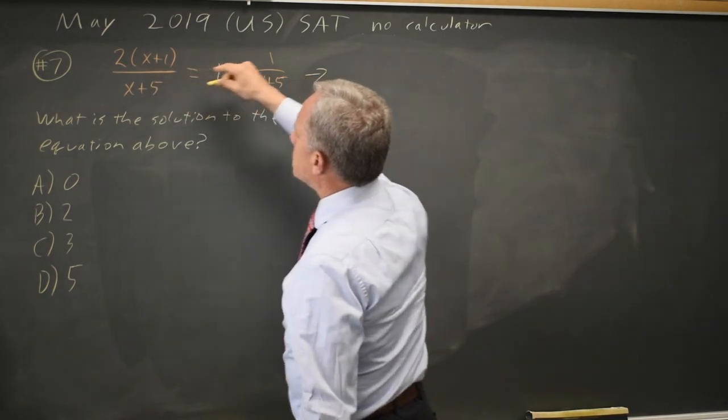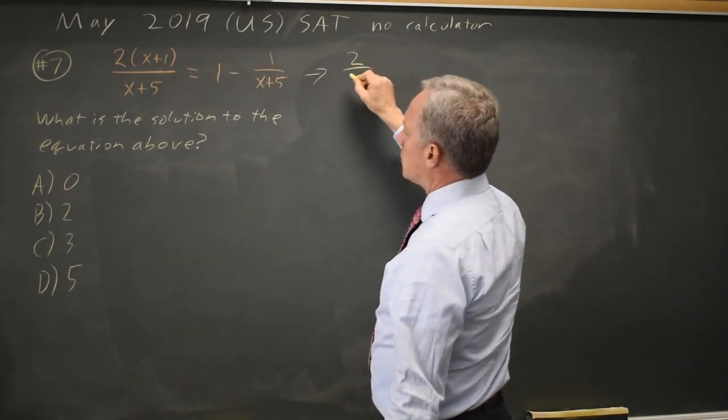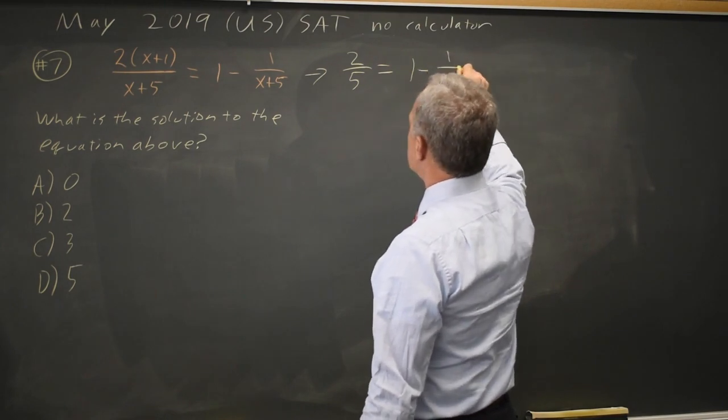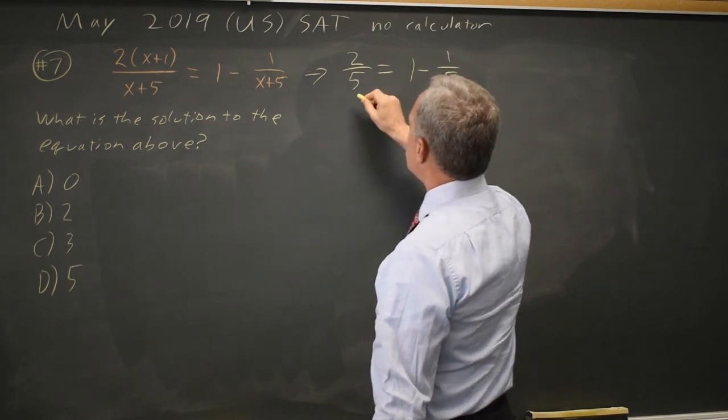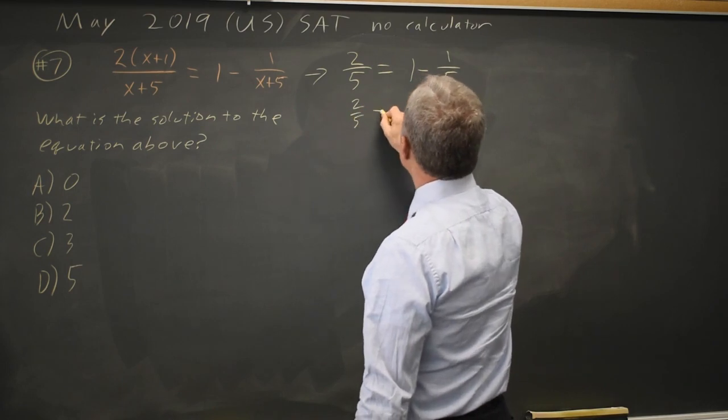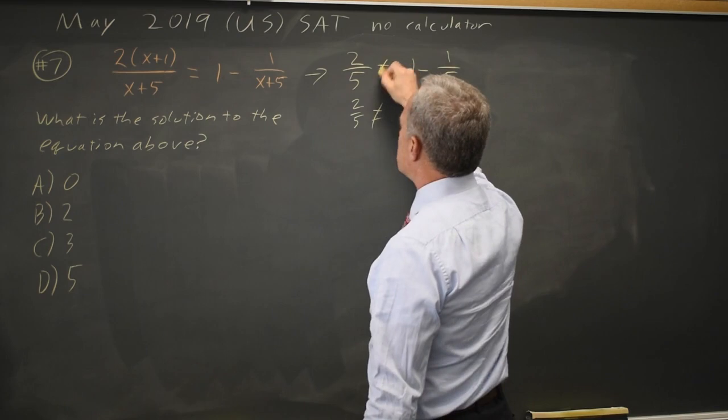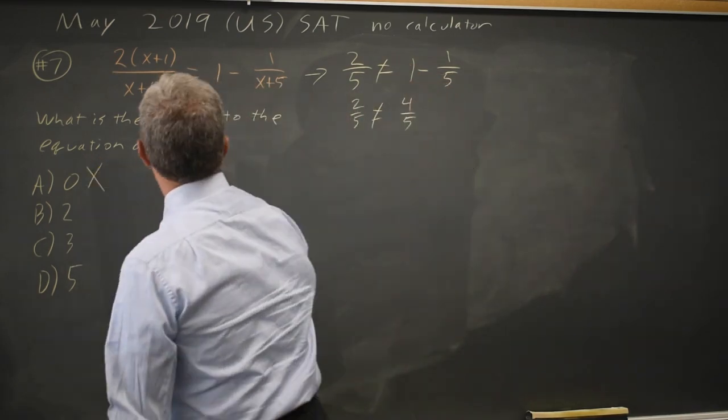At x equals 0, this is 2 times 0 plus 1 is 2, over 0 plus 5 is 5. They're asking, is that equal to 1 minus 1 over 0 plus 5, 1 over 5? And that's 2 over 5. Is that equal to 5 over 5 minus 1 over 5 is 4 over 5? And no. So choice A is wrong.